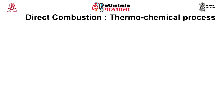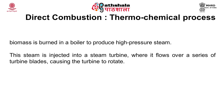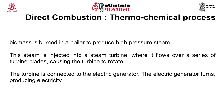The first thermochemical process is direct combustion. Here biomass is burned in a boiler to produce high-pressure steam. This steam is injected into a steam turbine where it flows over a series of turbine blades causing the turbine to rotate. The turbine is connected to an electric generator, which turns to produce electricity.